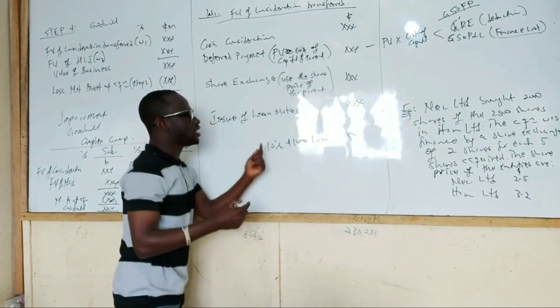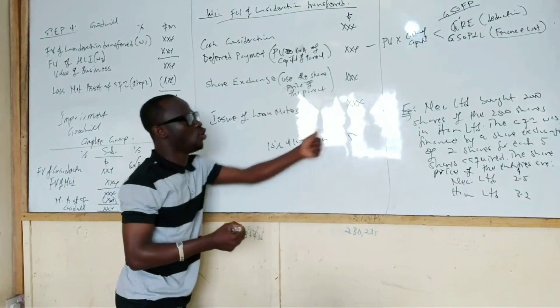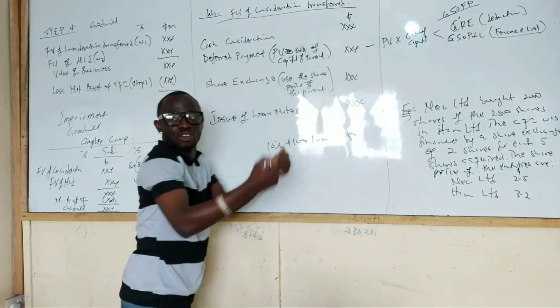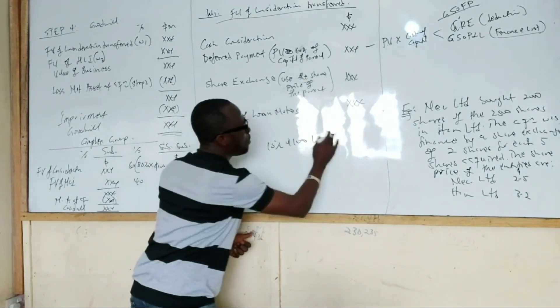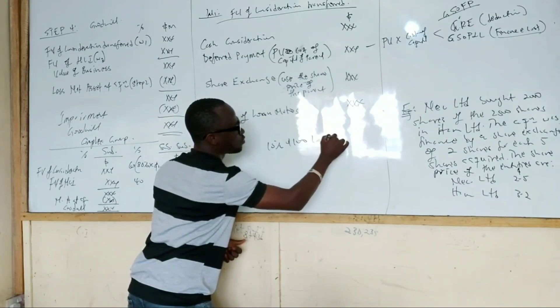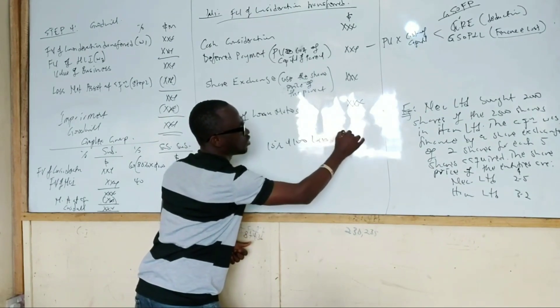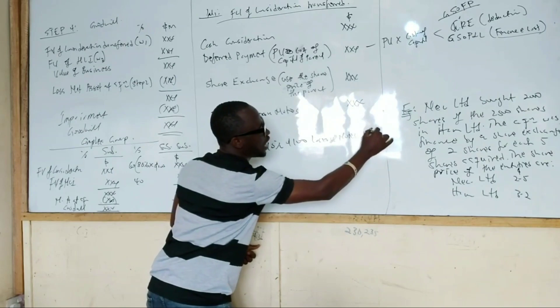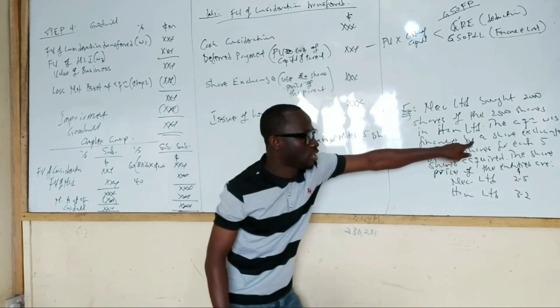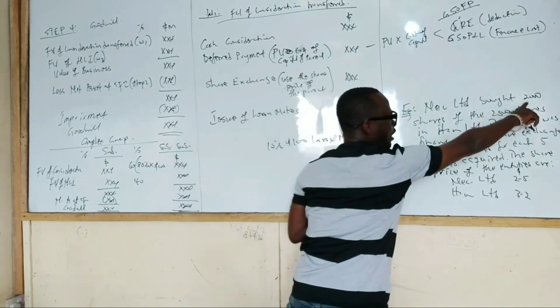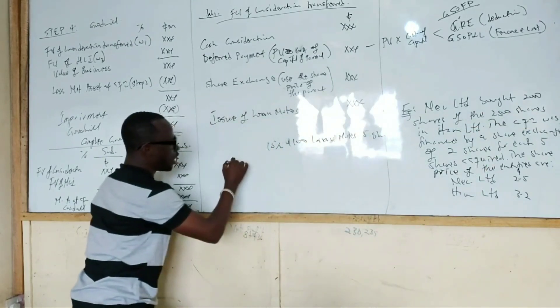So if it says 10% loan notes for every five shares acquired, how do you go about it? Like I am building on this first thing. So we acquire 2,000, isn't it? So how do we get a loan note figure?